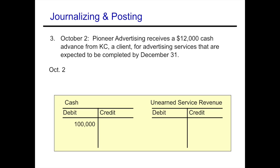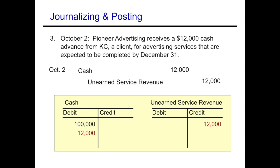Pioneer Advertising receives a $12,000 cash advance from KC, a client, for advertising services expected to be completed by December 31st. We debit cash for $12,000. Since we haven't earned the revenue yet, this is a service we owe someone — a liability called unearned service revenue — so we credit unearned service revenue for $12,000. We then post that to the ledger. Our new balance in cash is $112,000.